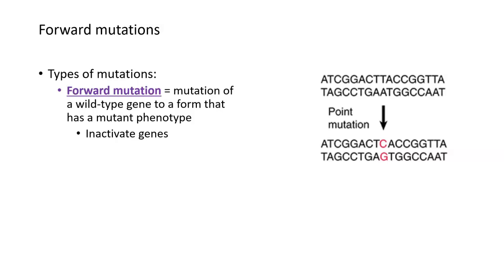Looking more at defining mutations by what they do to a phenotype, we can also classify mutations as forward or reverse mutations. A forward mutation is a mutation of what we would call a normal or wild type gene to a form that has a mutant phenotype. Generally, a forward mutation is a change in the DNA that inactivates a gene — a wild type gene goes from working perfectly fine to not working.